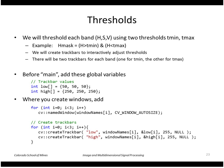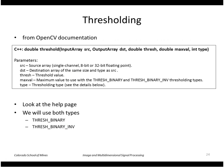Instead of hard-coding the thresholds, I'll show how to set them interactively using trackbars. The trackbars control values declared as global variables — three for T_min (low) and three for T_max (high). I create the windows and attach trackbars using createTrackbar, specifying the trackbar name, the window it belongs to, the variable it controls, and its maximum value.